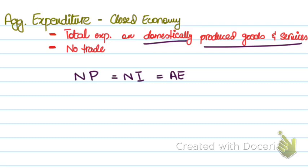In a closed economy, AE comprises three components: C, that's consumption; I, that's investment; and G, that's government expenditure — which makes it a three-sector model. Because of the presence of government expenditure, we can say that this economy is a closed, mixed economy.